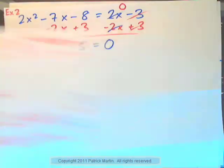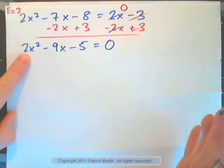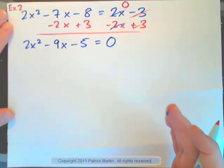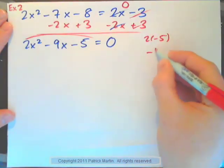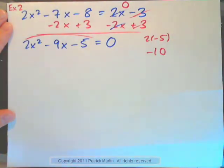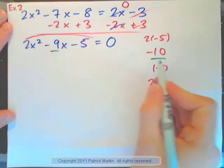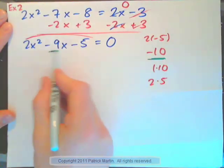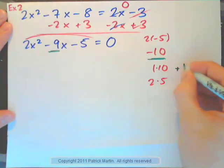So, that's the first step taken care of. I have zero on the right. Now, factor to the left-hand side. Coefficient of x squared is 2. So, do I need the short method or the long method? Long method, right? 2 times negative 5. Negative 10. Now, find two numbers that multiply to negative 10 and add to negative 9. List the pairs of factors of 10. 1 times 10. 2 times 5.